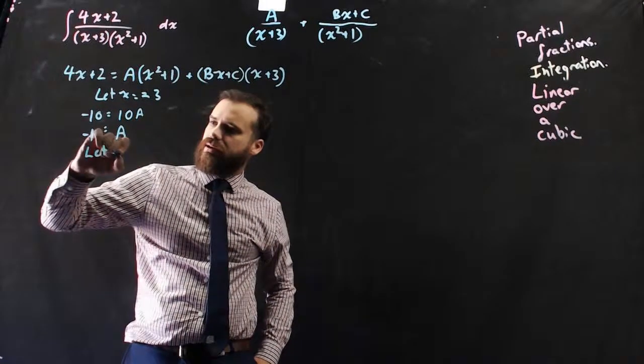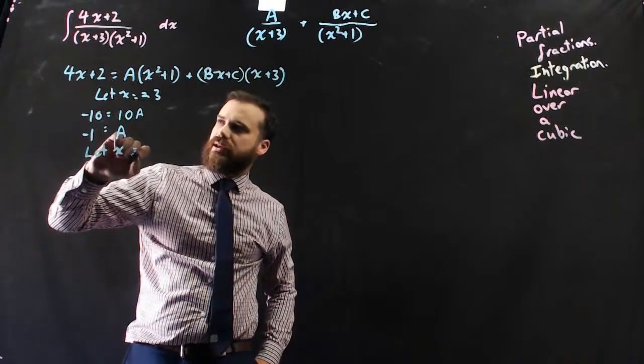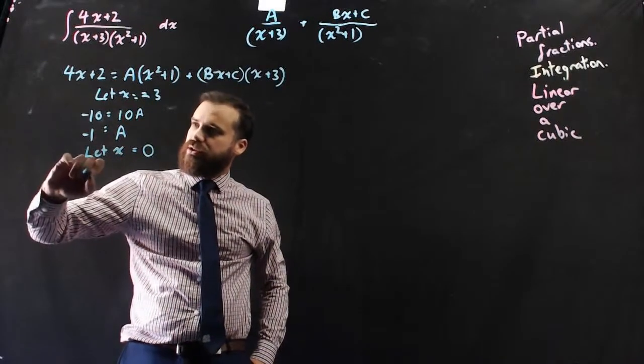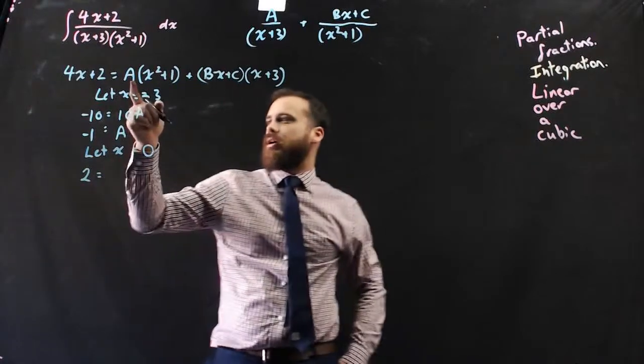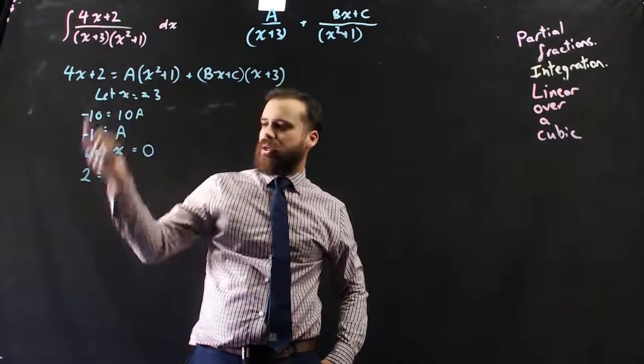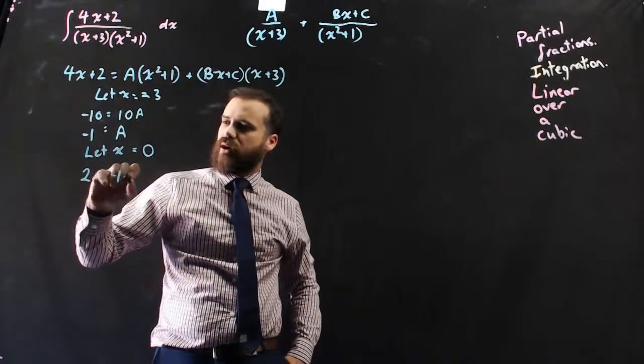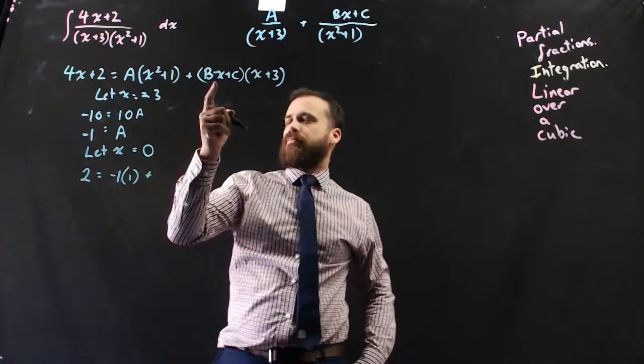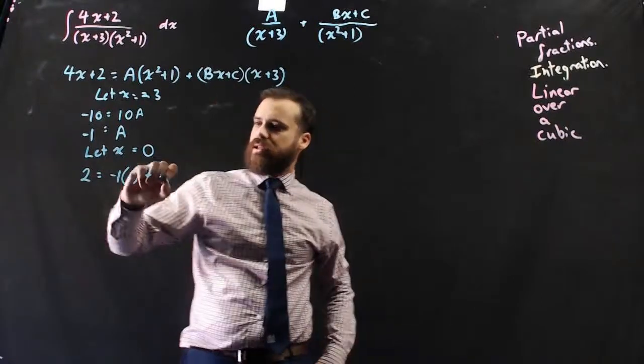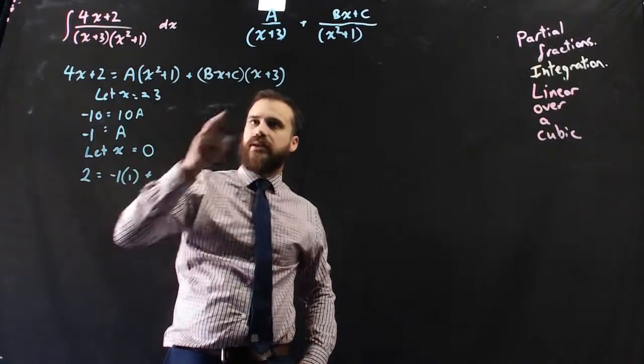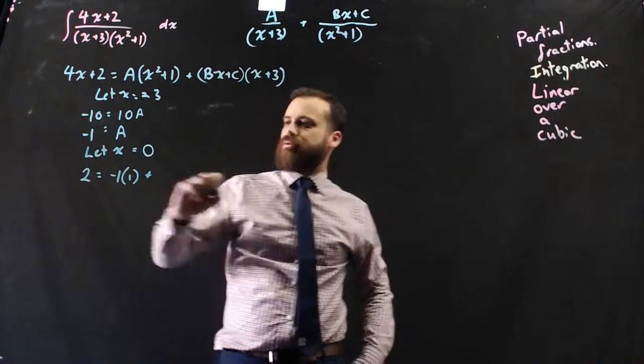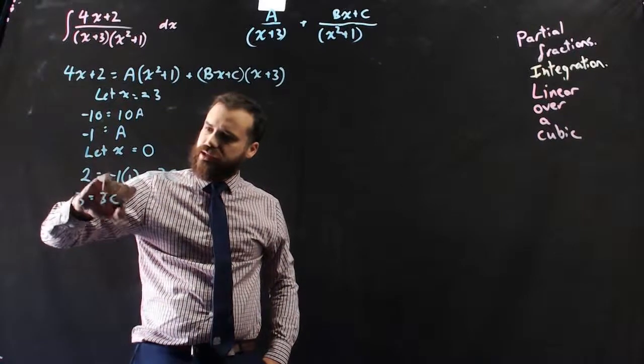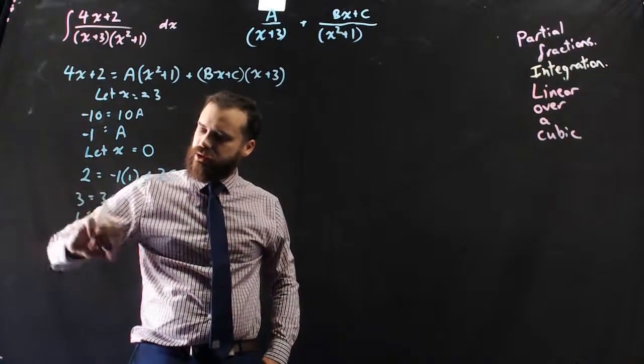So I'm going to let x equal 0, now 4 times 0 is 0 plus 2, so 2 is going to be on our left-hand side. I'm still going to let a equal negative 1 because you know what a is. So it's negative 1 times 1 plus c, and then it's 0 plus 3, so it's going to be 3c. So that's going to be 3 equals 3c, so c equals 1.